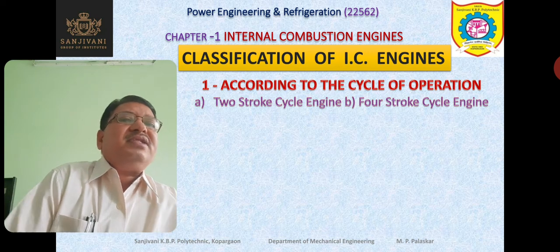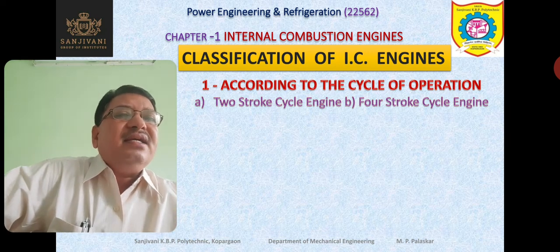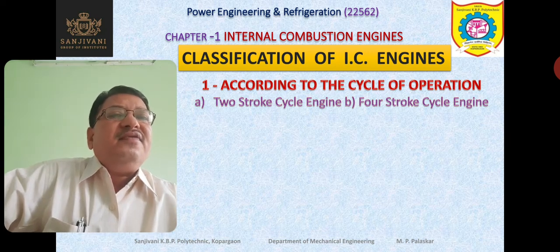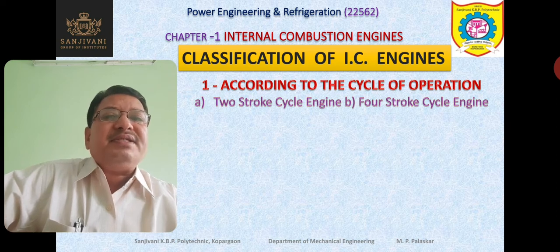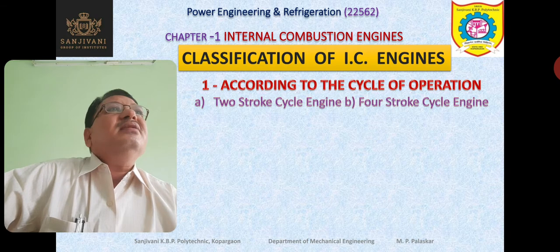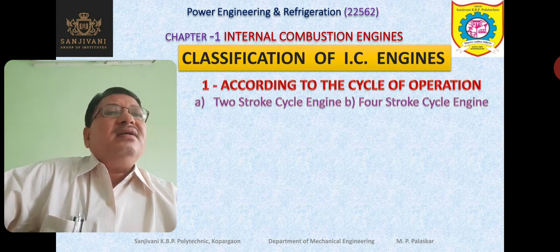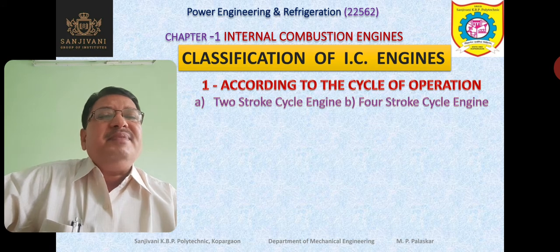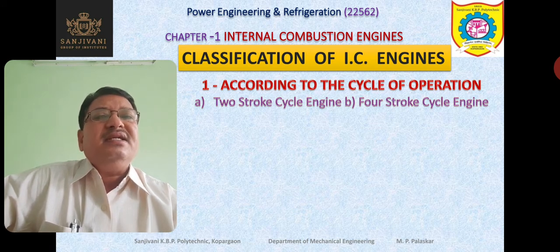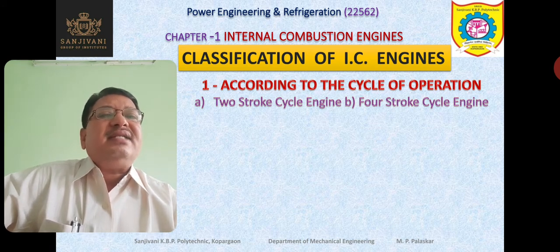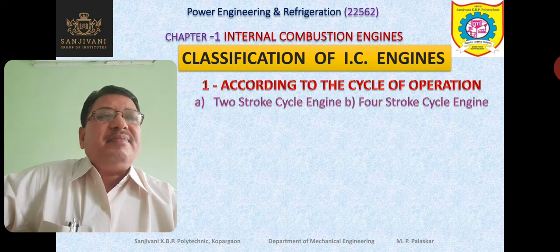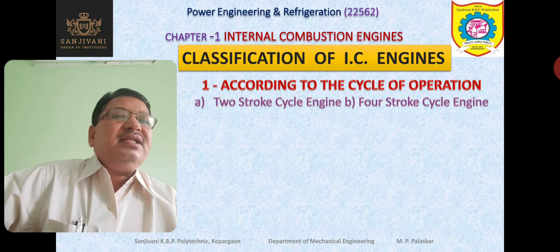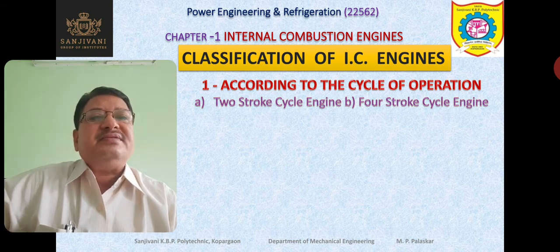In a four-stroke cycle engine, in one cycle four strokes of the piston take place. So the rotation of the crank will be two revolutions — 360 plus 360, that is 720 degrees will be covered by the crank in one cycle in the case of a four-stroke cycle engine.